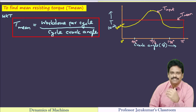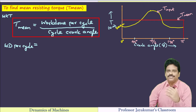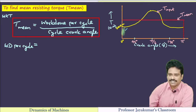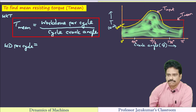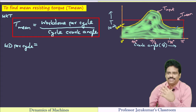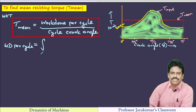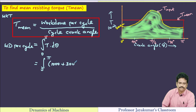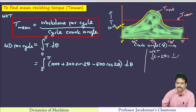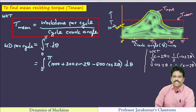T_mean equals work done per cycle divided by cycle crank angle. To find work done per cycle, we need to determine the area under the curve using integration. The lower limit is 0 degrees and the upper limit is π radians. By integrating the torque equation and applying the lower and upper bound limits, we get the work done per cycle.